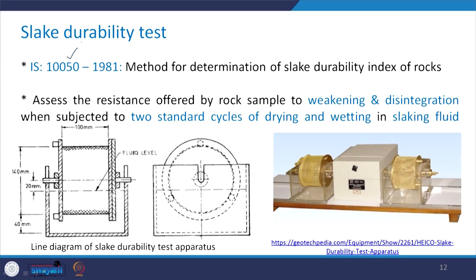Coming to the next test — the slake durability test. The relevant IS code is IS 10050, which gives us the method to determine the slake durability index of rocks. This test helps in assessing the resistance offered by the rock sample to weathering and disintegration when the rock is subjected to two standard cycles of drying and wetting in a slaking fluid, which is generally taken as water.